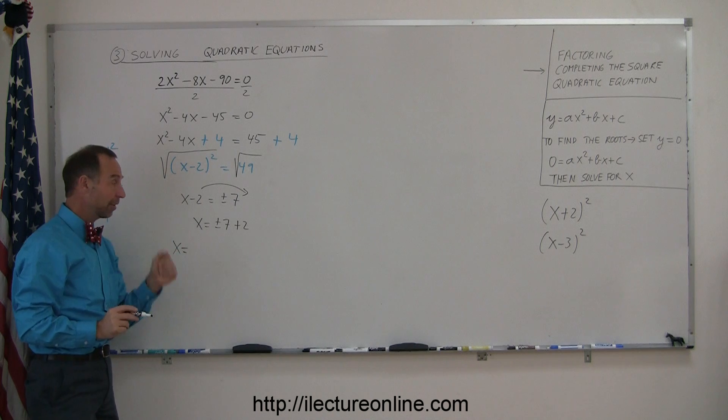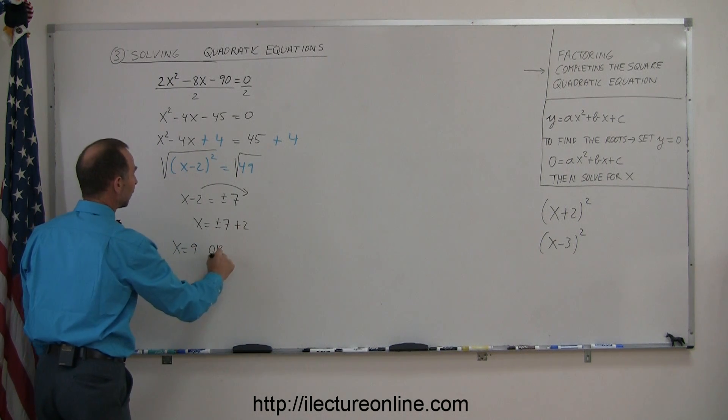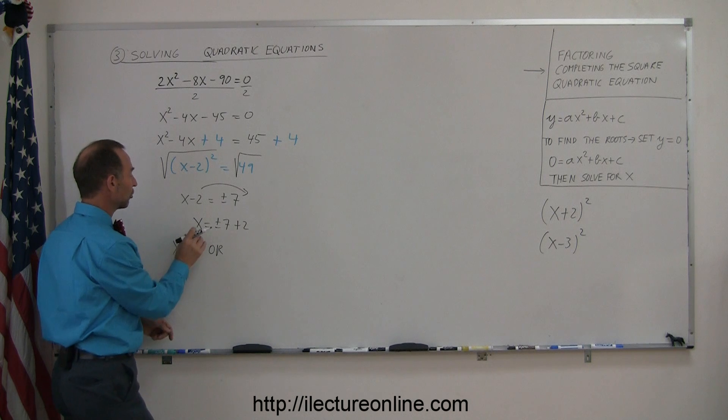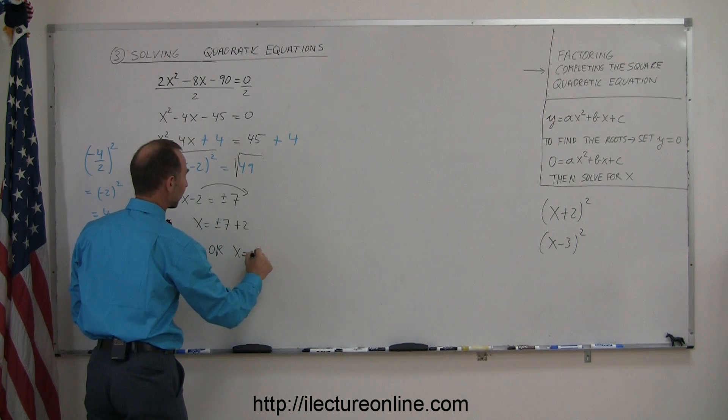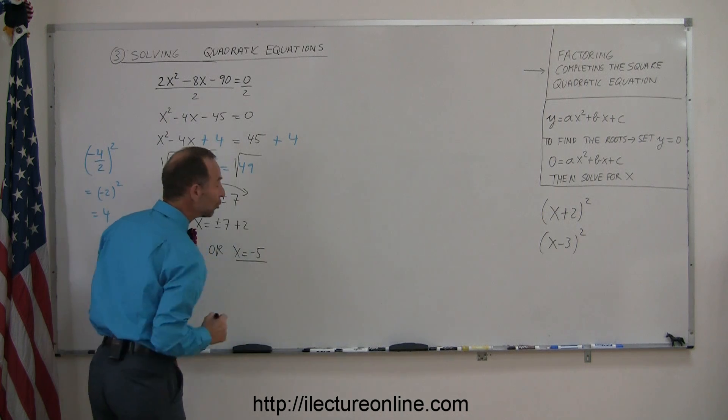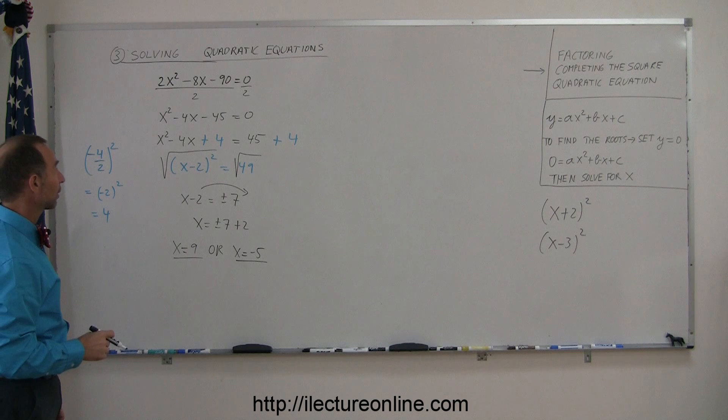If we take the positive option, 7 plus 2 equals 9. If we take the negative option, x equals minus 7 plus 2, which equals minus 5. These are the two solutions to the equation, or the two roots of the quadratic equation.